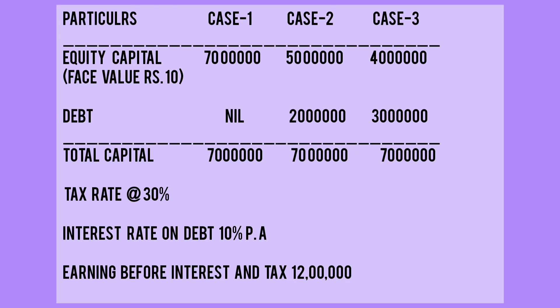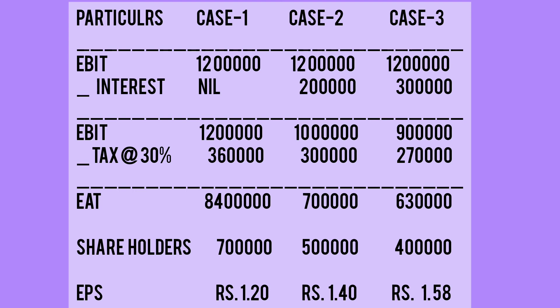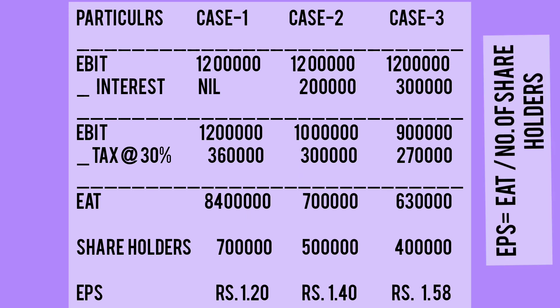In the first case there is no debt; in the second and third cases debt is given. First, we take Earning Before Interest and Tax — that is 12 lakh in each case. From that we minus interest on debt: nil in case one, then 2 lakh (10% of 20 lakh) and 3 lakh (10% of 30 lakh). So EBT becomes 12 lakh, 10 lakh, and 9 lakh. Then we deduct 30% tax to get Earning After Tax.